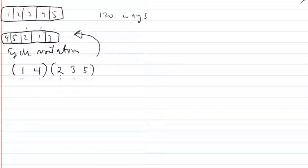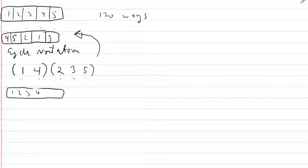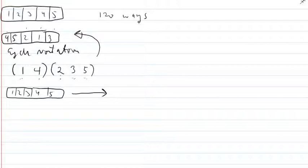Now, these permutations don't just have to describe the starting state of the five numbers — they could also describe some kind of change, like a move in one of our games. Imagine I have 1, 2, 3, 4, 5 in their original positions, and I can do things like swap two of them. If I want to swap the thing in position 2 with the thing in position 3, I can write that movement as (2 3), which means the thing in the second position moves to the third, and the thing in the third moves to the second.